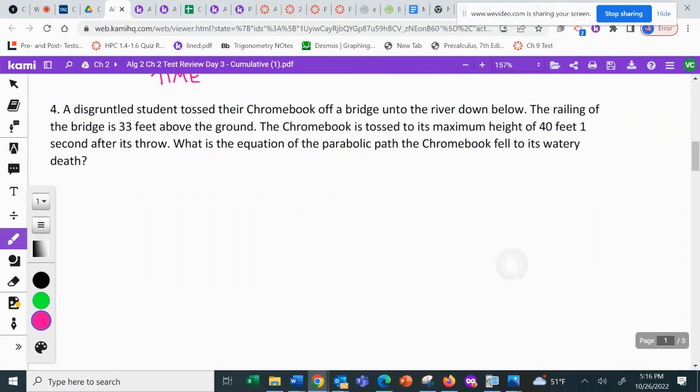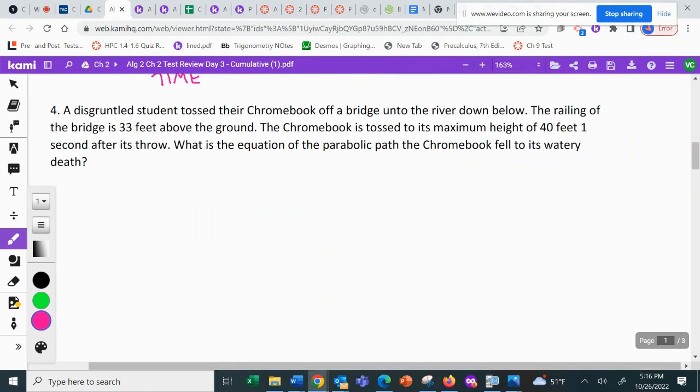Number four, a disgruntled student tossed their Chromebook off the bridge into the river below. The railing of the bridge is 33 feet above the ground. Okay. I got a bridge. There's my railing. Alright. That's going to be 33 feet off the ground. The Chromebook is tossed to its maximum height of 40 feet one second after its throw. So this student is tossing it higher to a maximum of one second 40 feet high.